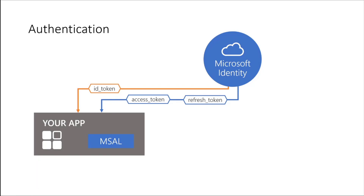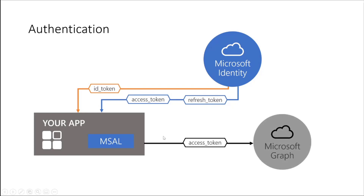With the ID token, whoever is the user trying to sign into your app will prove their identity. With the access token, your application will make a call to the protected web-hosted resource — here it is Microsoft Graph API. This call is an HTTP GET request, and the access token is passed as a bearer token in the authorization header. The API will then validate this token and authorize access for your application to its resource.